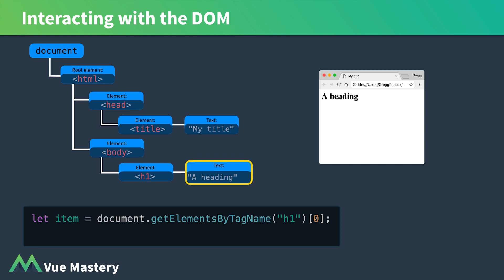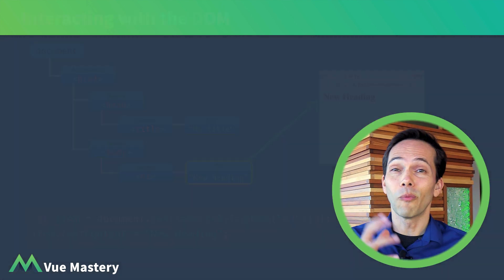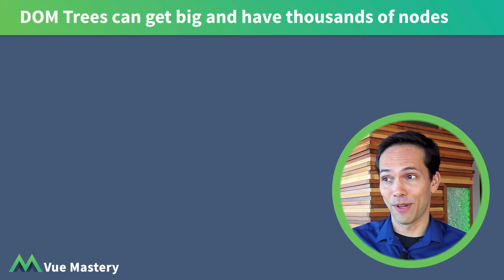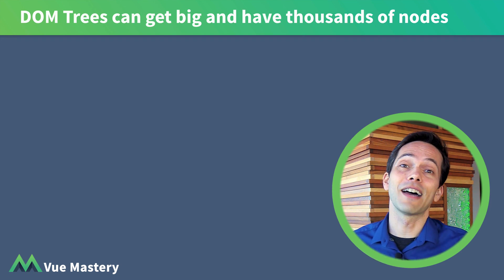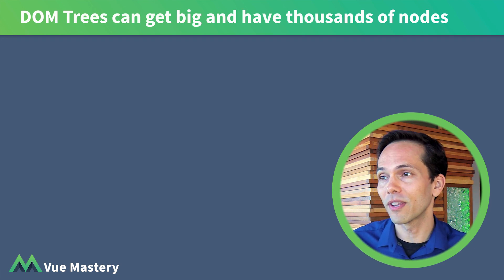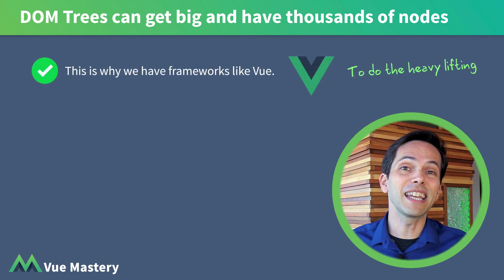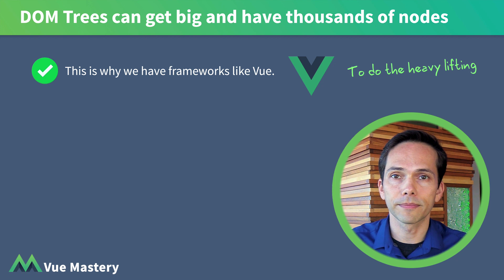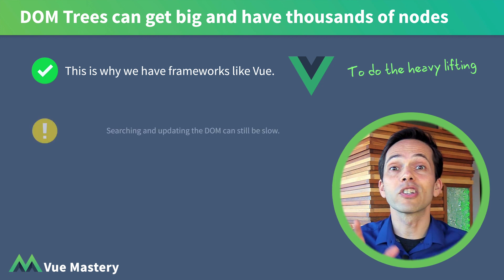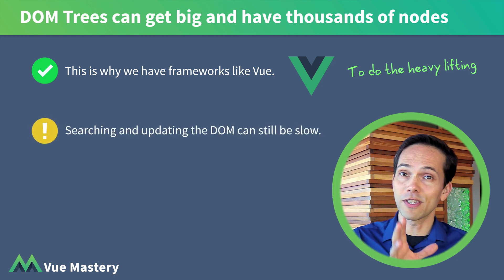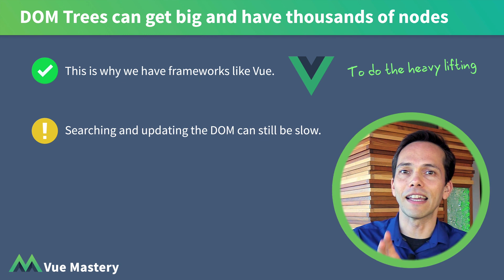We can retrieve an element, change its text content to 'new heading,' which updates the node and then updates our browser. Web pages can have a lot of DOM nodes, which means DOM trees can have thousands of nodes. That's why we have frameworks like Vue to do the heavy lifting for us and make a lot of these JavaScript calls. However, searching and updating thousands of DOM nodes can obviously get slow.